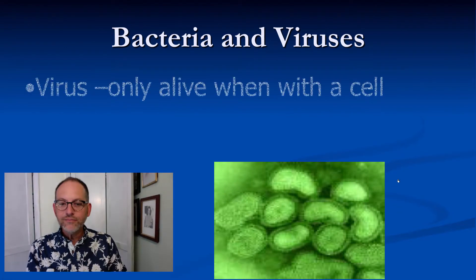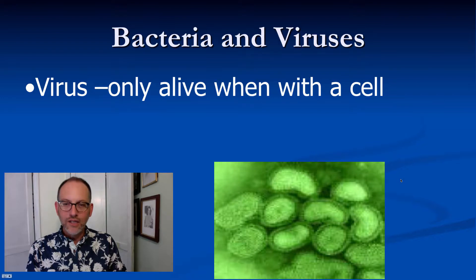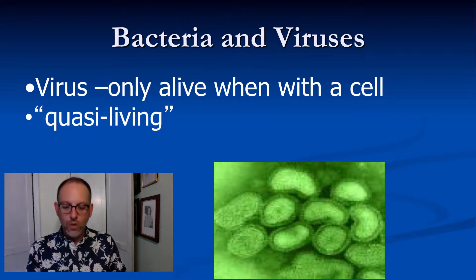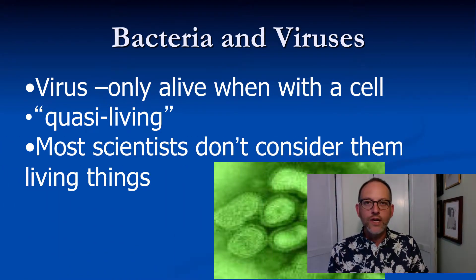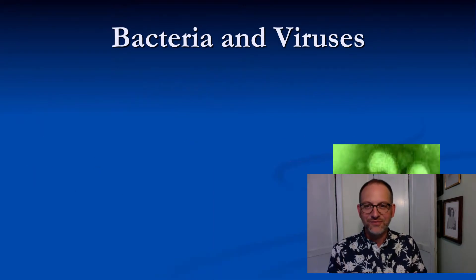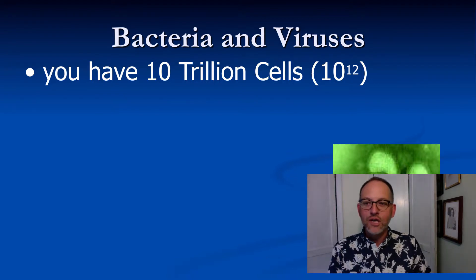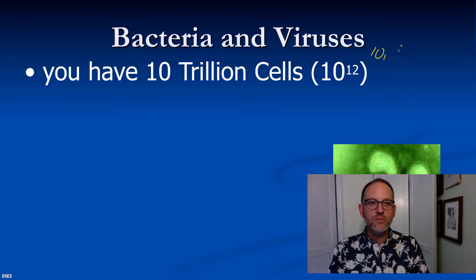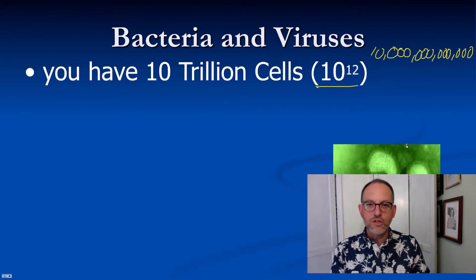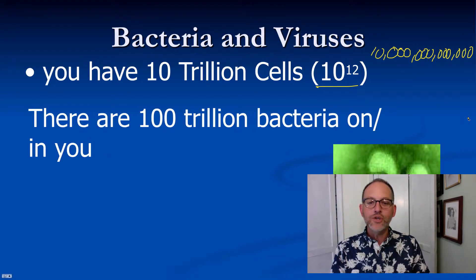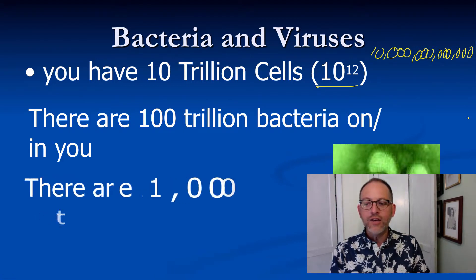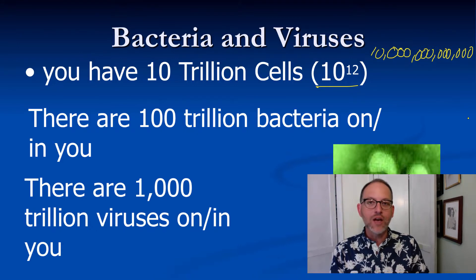Viruses can only be living when they are attached to another cell — this is called quasi-living — and most scientists agree that viruses are not considered a living thing because they don't fit all the criteria. Here are some numbers that may astound you: you have about 10 trillion cells, 100 trillion bacteria on you, and about 1,000 trillion viruses on or in you.